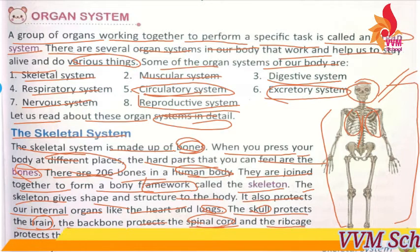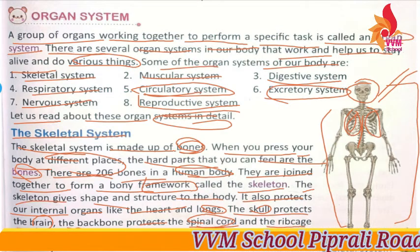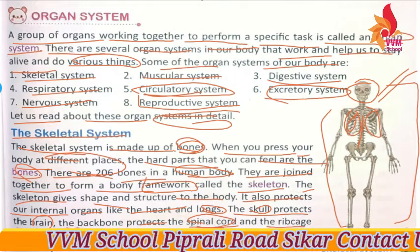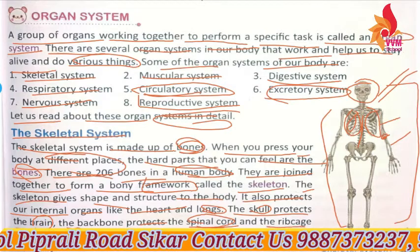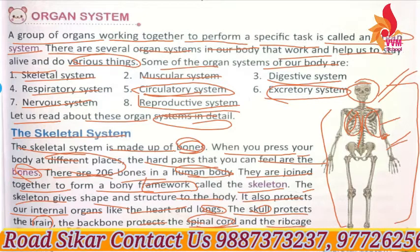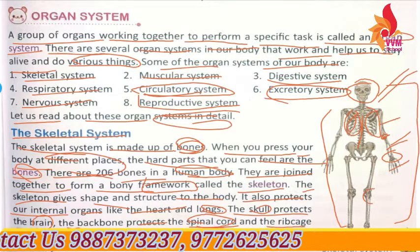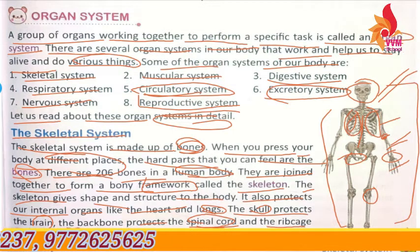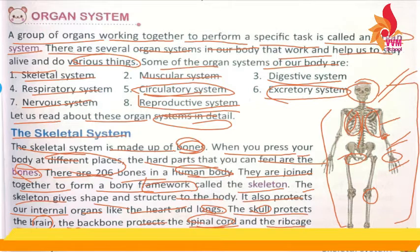The backbone protects the spinal cord. The rib cage protects the heart and lungs. The meeting place of two bones is called a joint. Bones come together at joints. I hope you understand about the skeletal system, and the remaining chapter we will discuss in our next class.